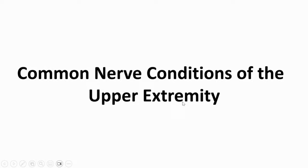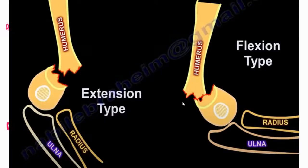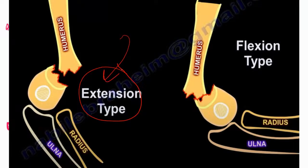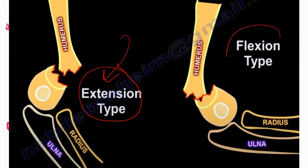Common nerve conditions of the upper extremity. Supracondylar fractures of the humerus in children can involve nerve injuries. The most common extension type affects the anterior interosseous nerve — really the high median nerve, but it presents as an anterior interosseous nerve injury. The flexion type is rare and affects the ulnar nerve.